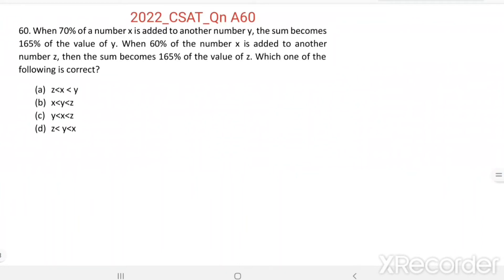Question number 60. When 70% of a number x is added to another number y, the sum becomes 165% of the value of y. When 60% of the number x is added to another number z, then the sum becomes 165% of the value of z. Which one of the following is correct?